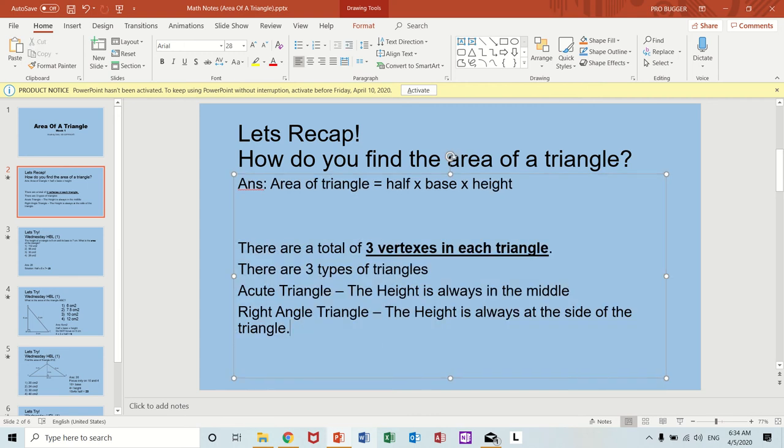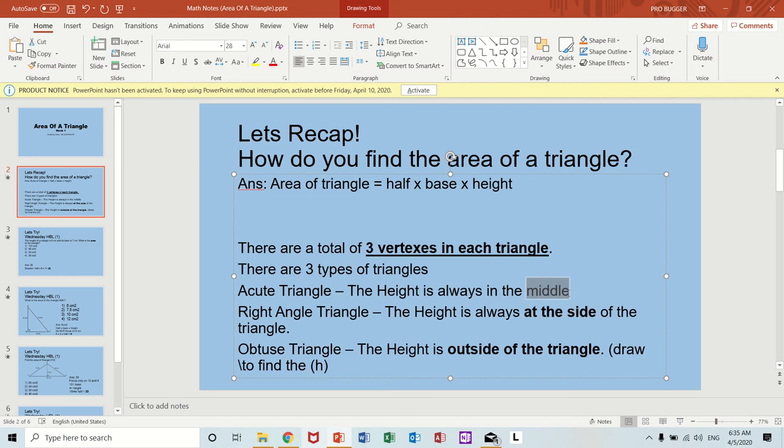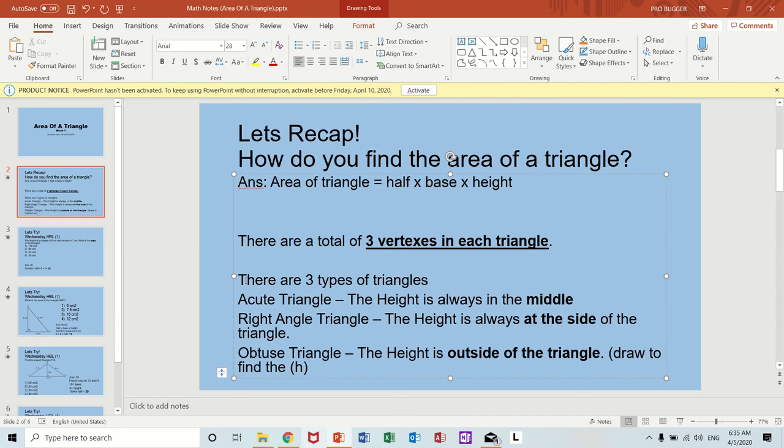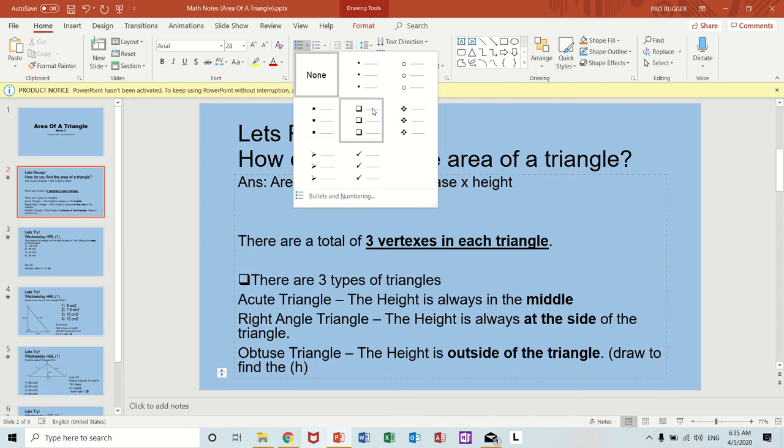Last but not least, we also have an obtuse angle triangle. The height is outside of the triangle, that means you must draw to find the height. Keywords: outside of the triangle, at the side, in the middle. This is a very important learning point.